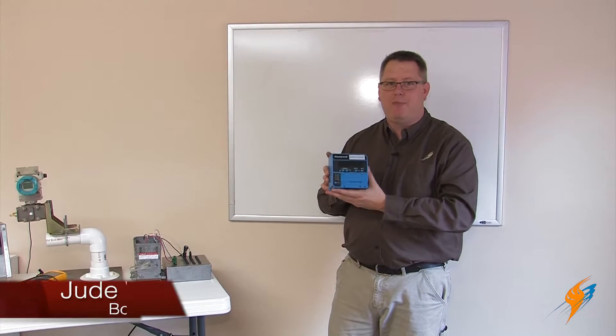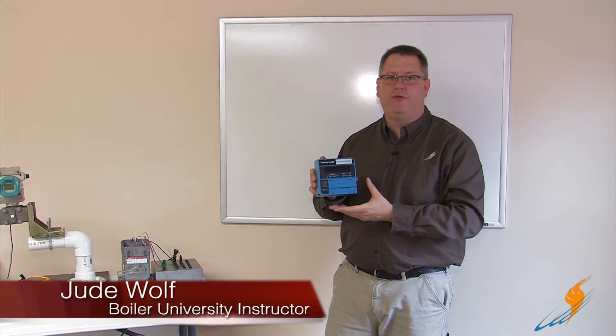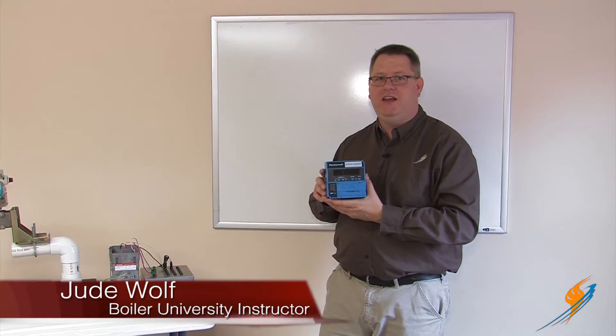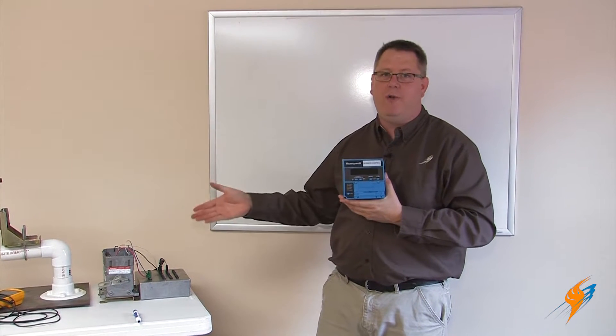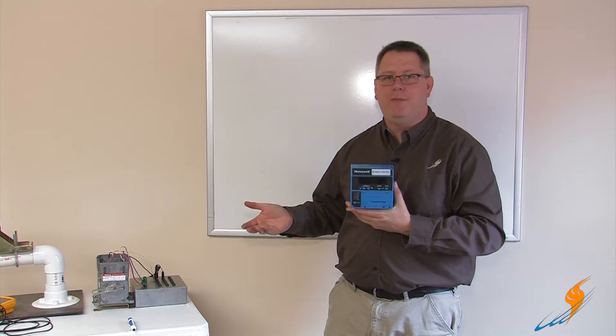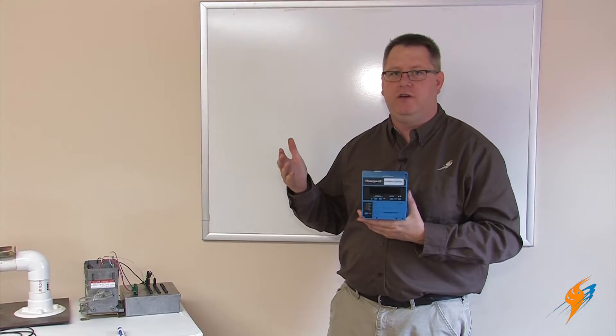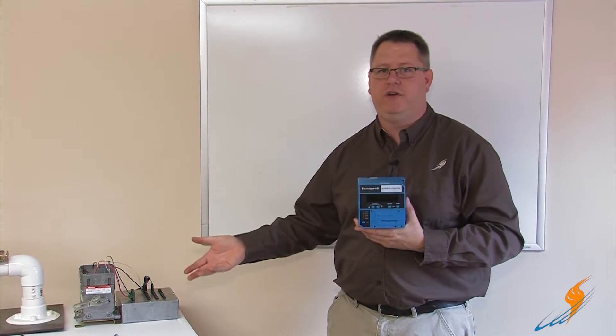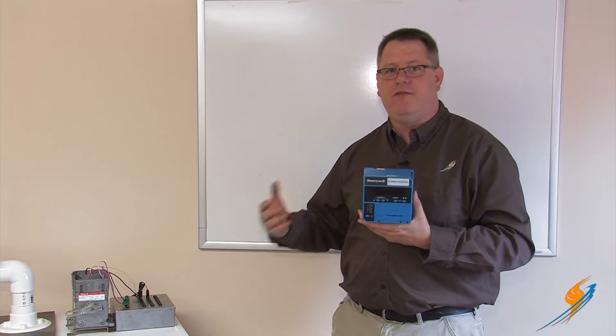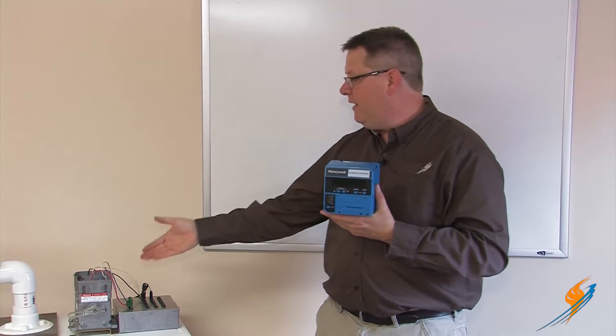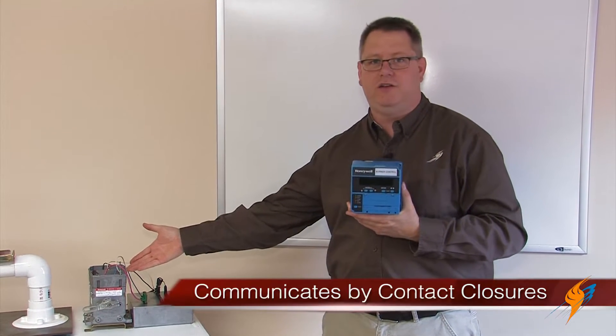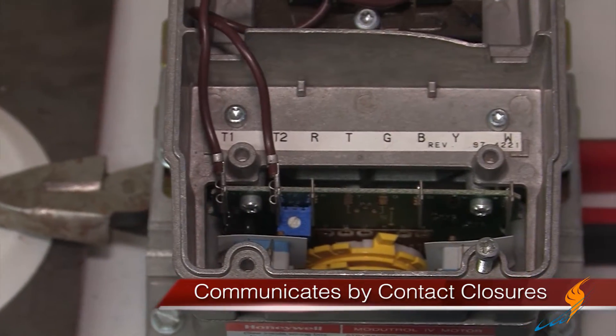For a flame safeguard to properly and safely sequence a burner for the light off, it has to send information to our mod motor in order for the mod motor to drive the burner to the open or purge position or close to the light off position. The way that the flame safeguard communicates that is by sending contact closure into terminals on the actuator.